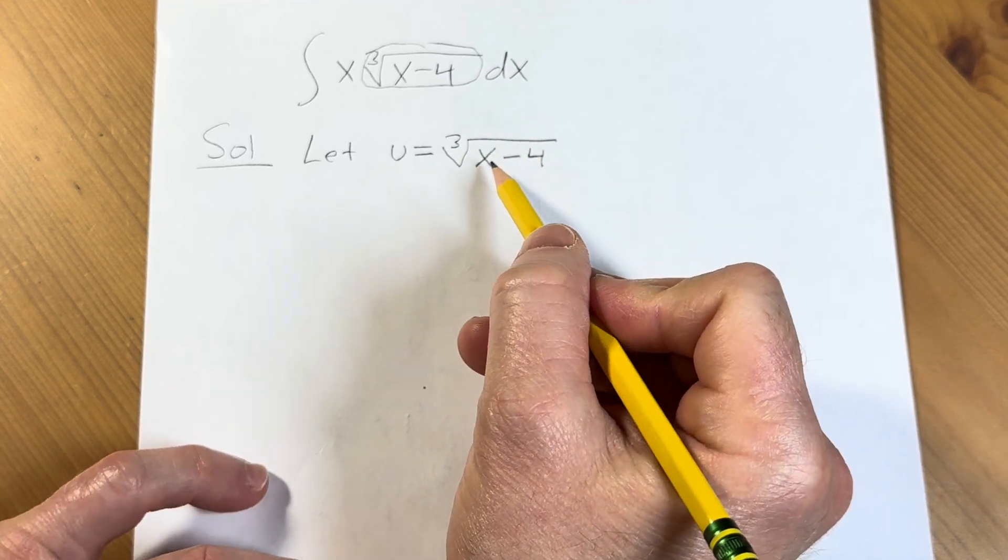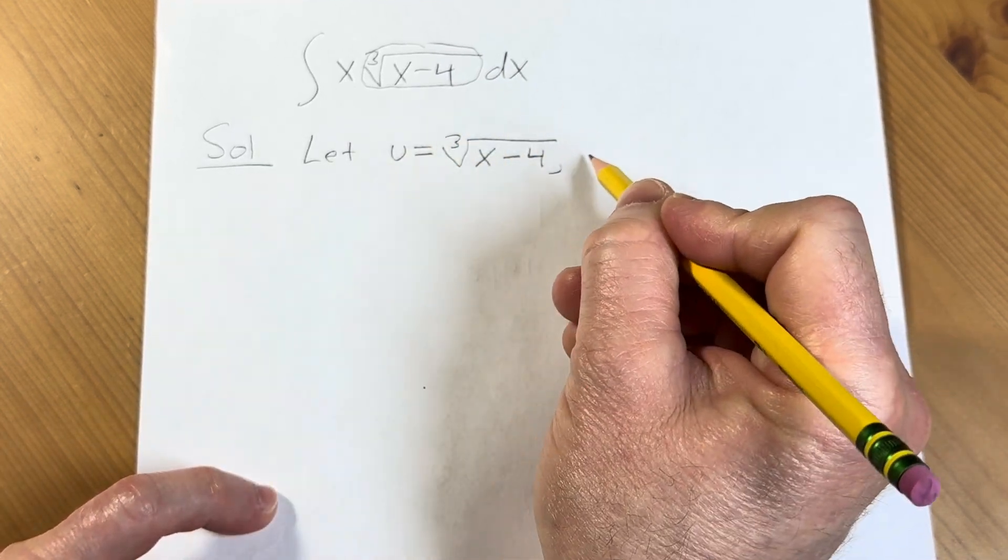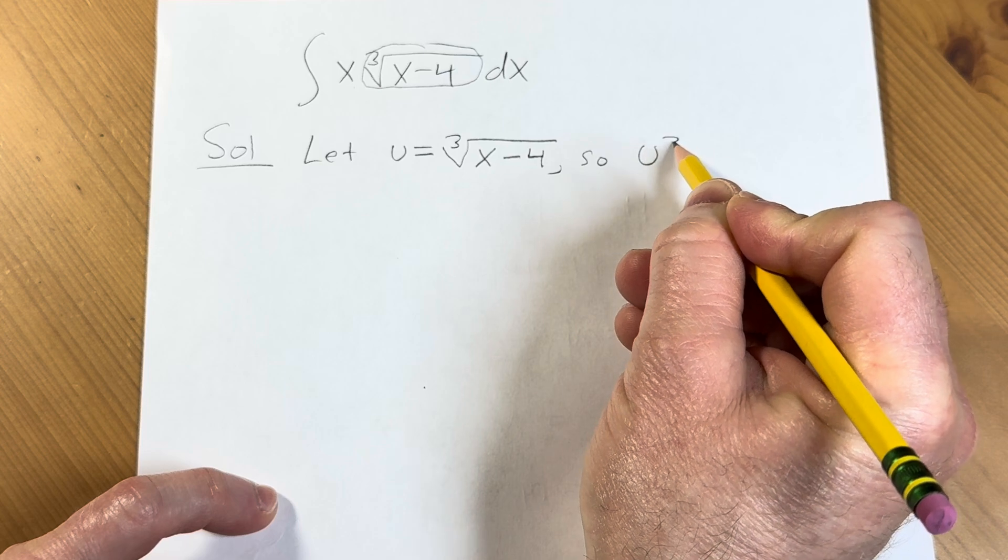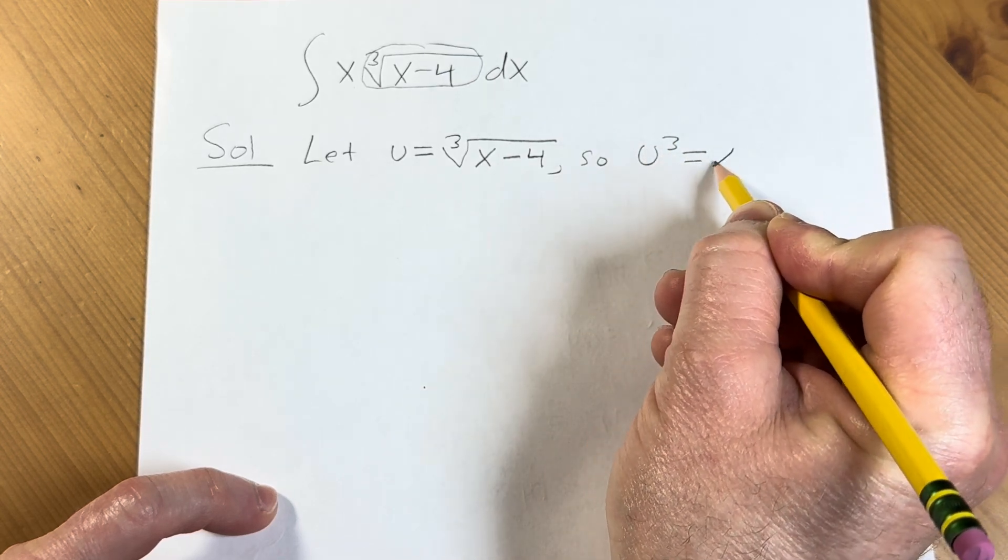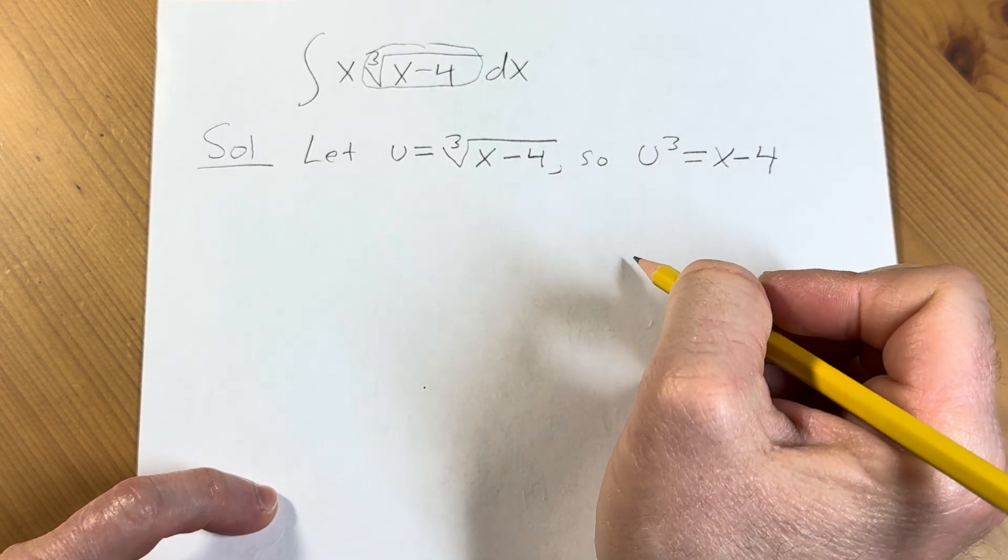Now we're going to get rid of the cube root simply by cubing both sides. So this means that u cubed is equal to x minus 4, just like that.